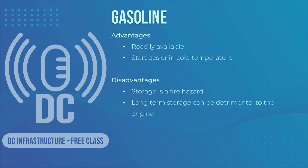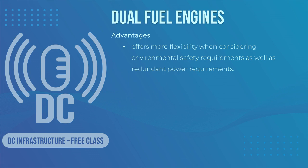Gasoline is often used in smaller engine generator sets because it is readily available and gasoline-powered engines start easier than diesel engines in cold temperatures. The disadvantages are that storage of gasoline is a fire hazard, and long-term storage and usage of old gasoline can be detrimental to generator engine performance. Lastly, there is the option of a dual-fuel engine — for example, if the generator is capable of using natural gas and liquefied petroleum gas, it offers more flexibility for environmental safety and redundant power requirements.